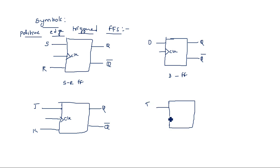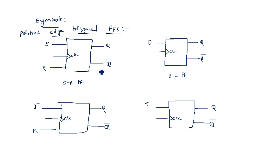T flip-flop has input T with a clock, and outputs Q and Q-bar. These are the symbols of the positive edge-triggered flip-flops — all four of them.